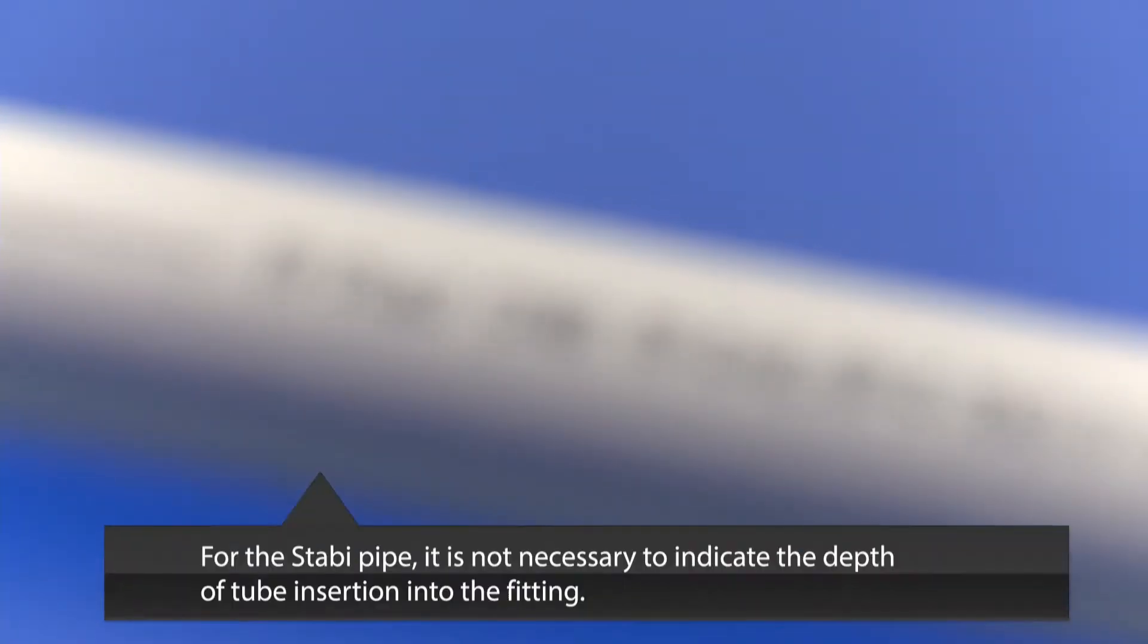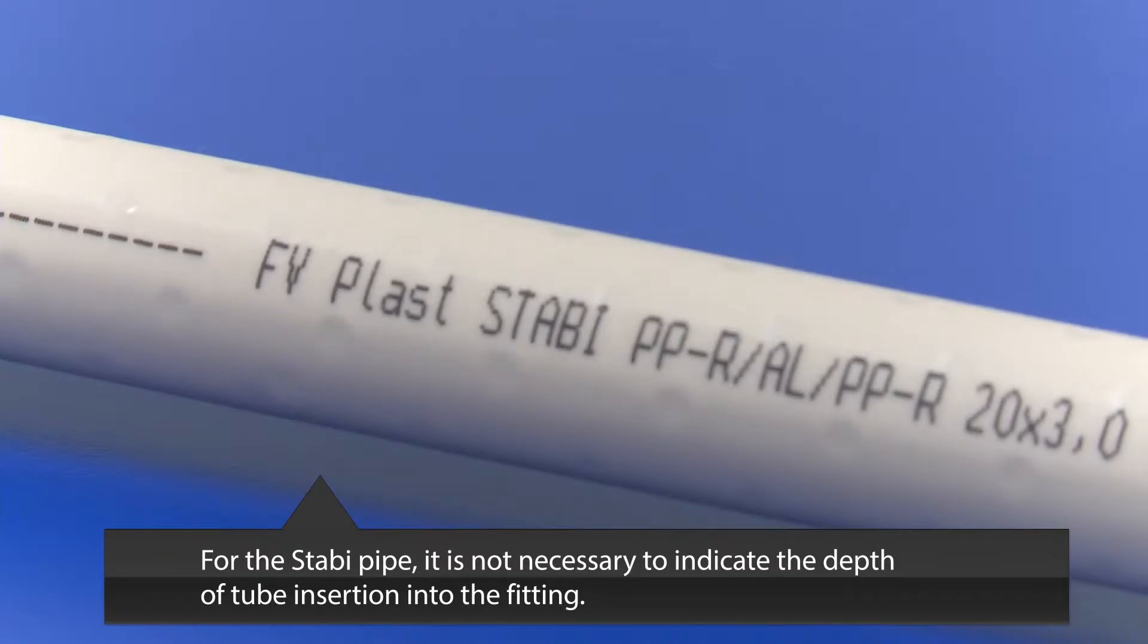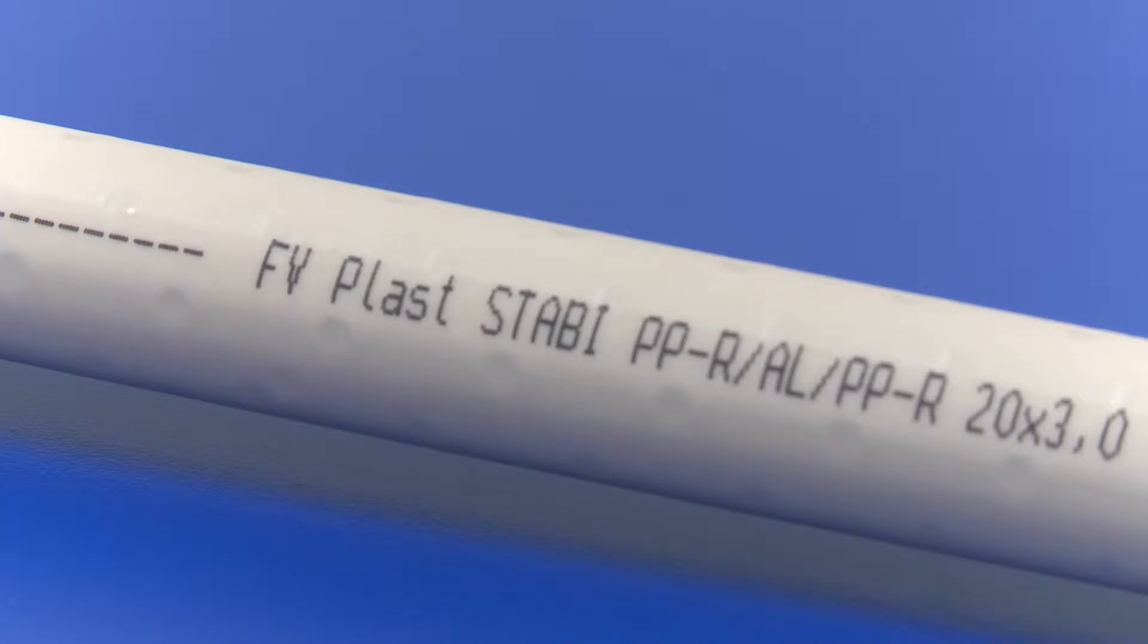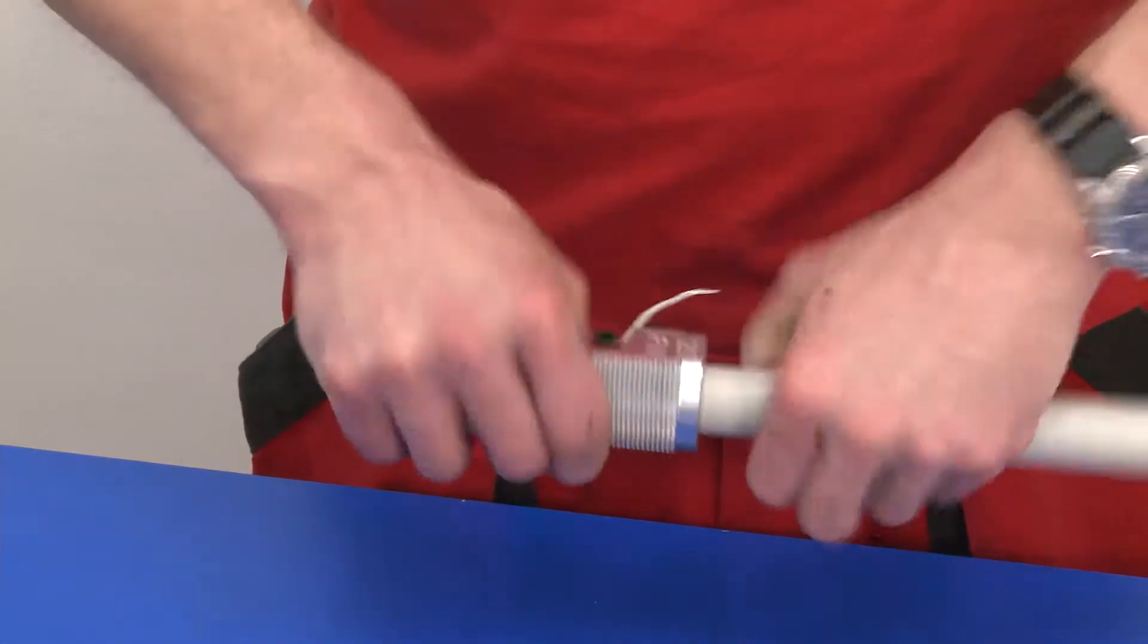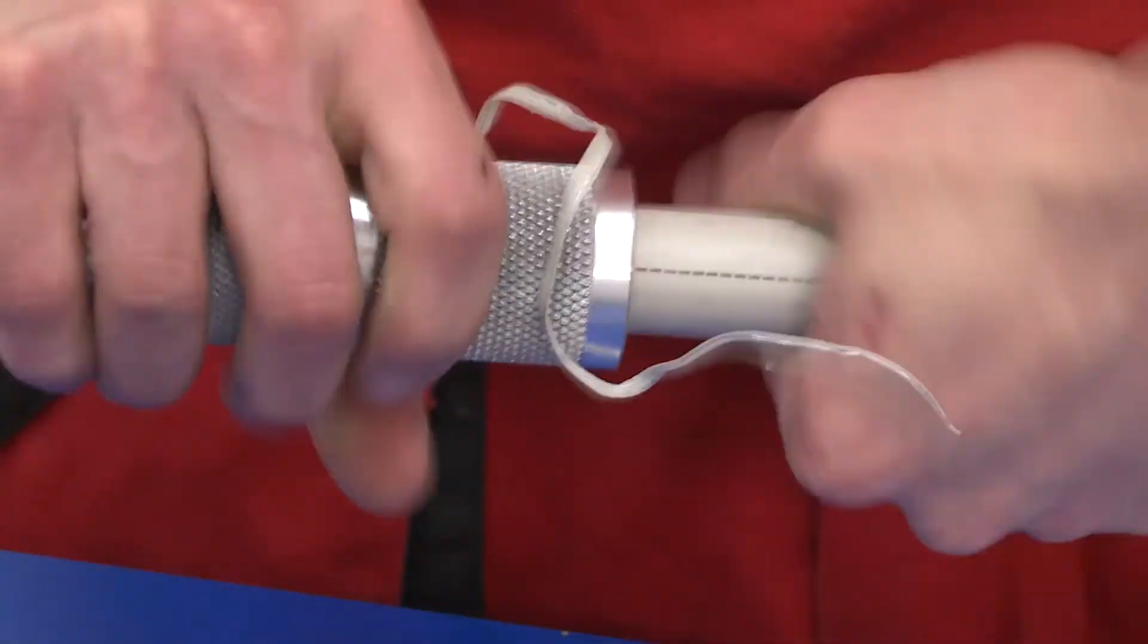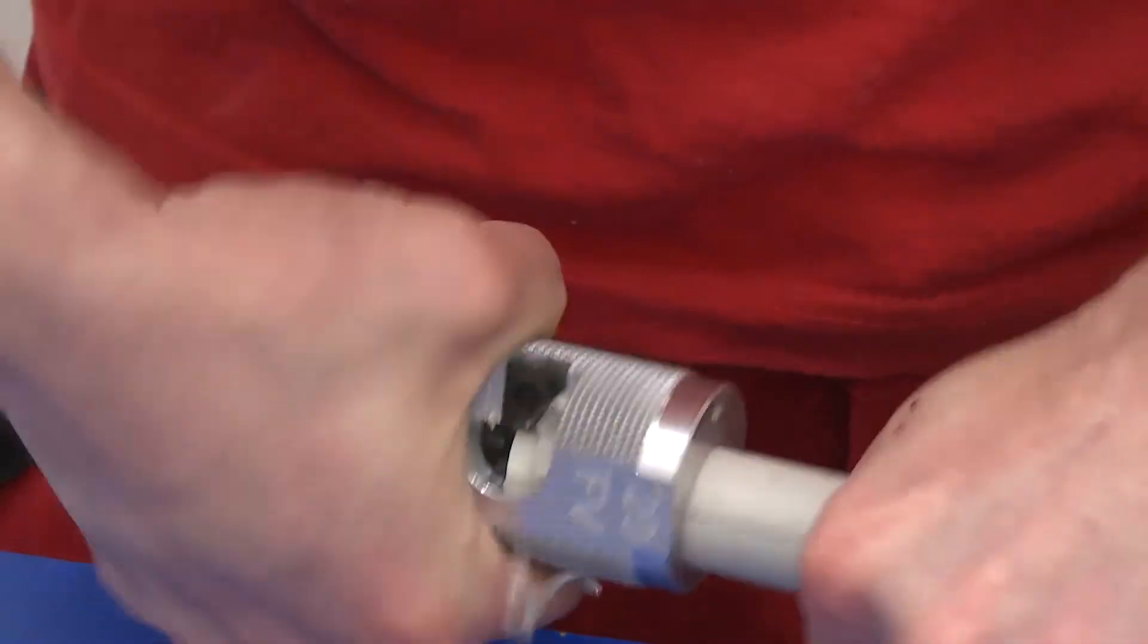If we connect the FV Plast stubby pipe it is not necessary to indicate the depth of insertion of the pipe into the fitting. Before welding we remove the top plastic and middle aluminium layer evenly from the entire surface and to the desired length using a cutter. When doing this we keep a prescribed diameter for welding.